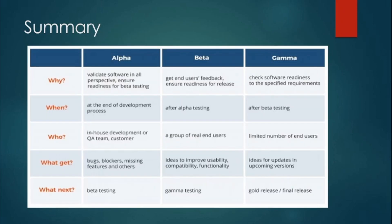Here is a summary of all three types. Alpha testing is done to validate software in all perspectives and to ensure readiness for beta testing. In beta testing, end users provide feedback, and it ensures readiness for gamma release. In gamma testing, the software is checked for readiness against specified requirements.